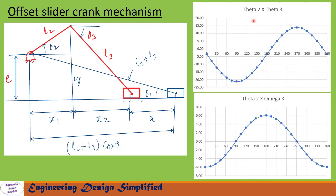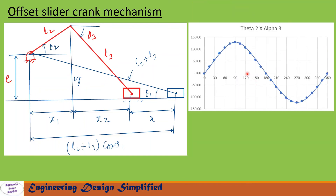In this graph we have plotted theta2 versus theta3 — theta2 along the horizontal axis and theta3 along the vertical axis — showing the variation of theta3. In this graph we have plotted theta2 versus omega3, showing the variation of omega3. In this graph we have plotted theta2 versus alpha3 — theta2 again along the horizontal and alpha3 along the vertical — showing the variation of alpha3 with respect to theta2.